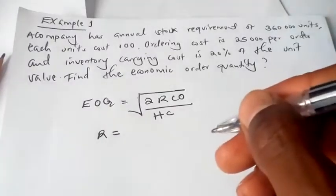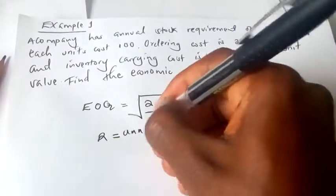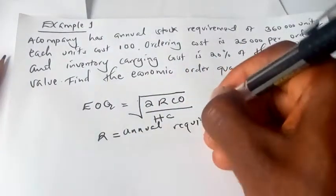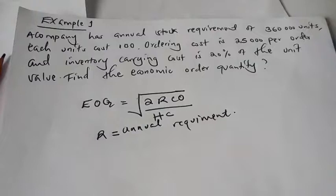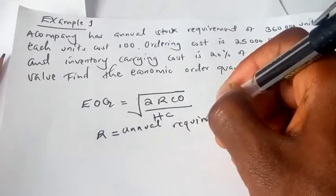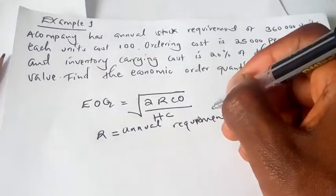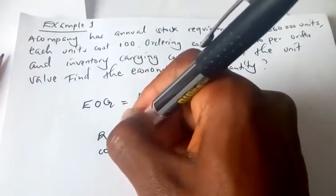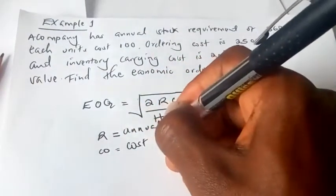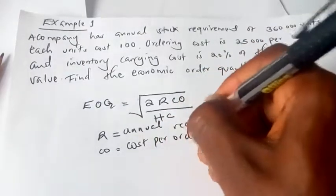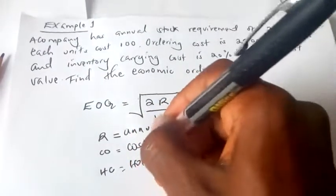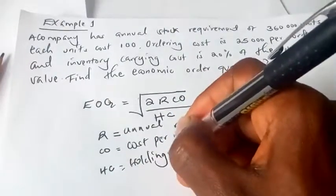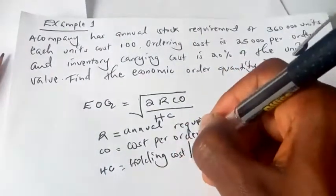Where R is equal to annual requirement, CO is equal to cost per order, and HC is the holding cost annually.